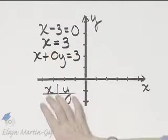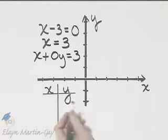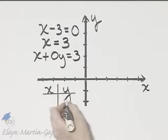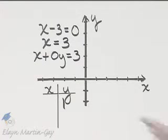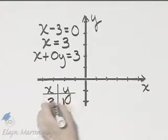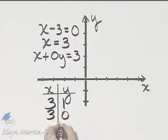But I hope it makes sense to you that ordered pair solutions will have an x value of 3. Because no matter what you allow y to be, suppose you allow y to be 1. If y is 1, 0 times 1 is 0 and x must be 3. As long as the x value is 3, you have an ordered pair solution.